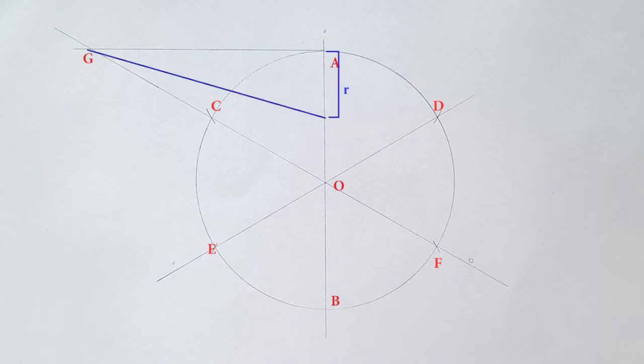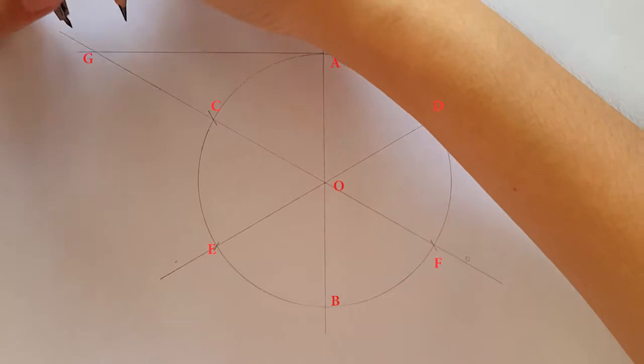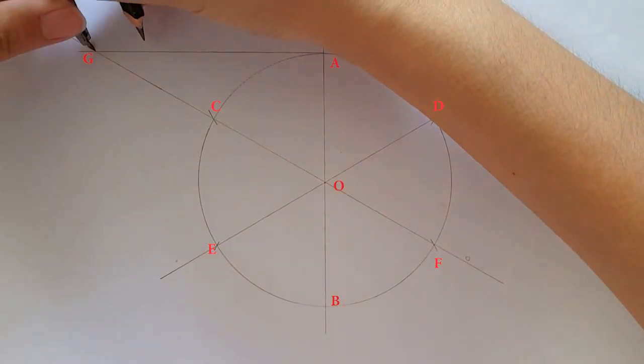And now, we're going to bisect this angle to find radius length of inscribed circle. Place your compass on point G to draw bisector marks.